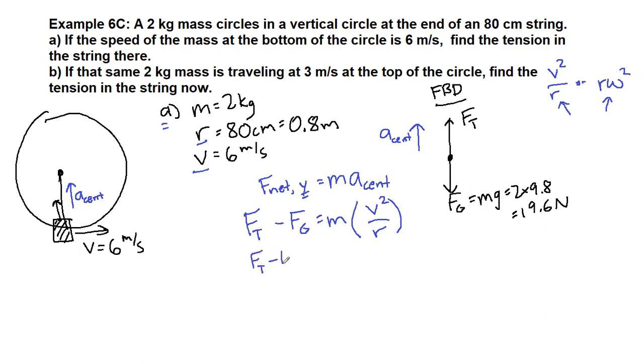So we can plug in what we have: tension minus 19.6 equals 2 times 6 squared over 0.8. Now we're going to add 19.6 to both sides so that tension is all by itself. So this 2 times 6 squared over 0.8, that's 90. We've added 19.6 to both sides so it's over here, and so we get 109.6, which is perfectly fine. It's also approximately 110 newtons. So that's our answer to part a, pretty big tension because we need the rope to be able to pull the block up against gravity and get it to move upwards after that point.